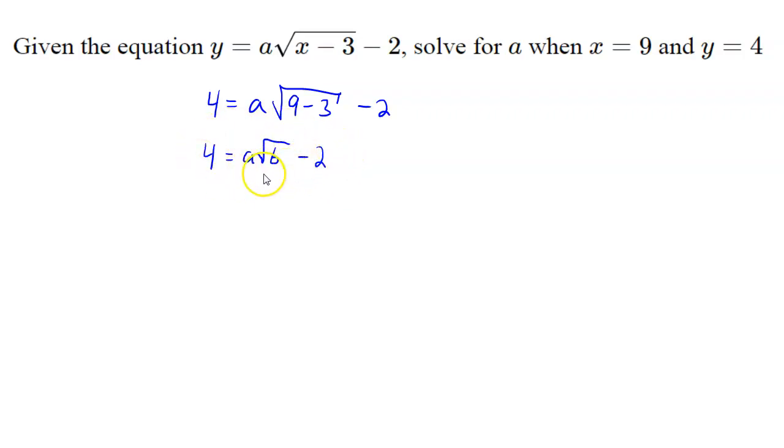And now we want to solve for a. So we are going to move this 2 over to the other side. Since the 2 and the square root of 6 aren't like terms, we'll move it over so that we can combine it with a like term. So we'll add 2 to both sides. 4 plus 2 is 6.